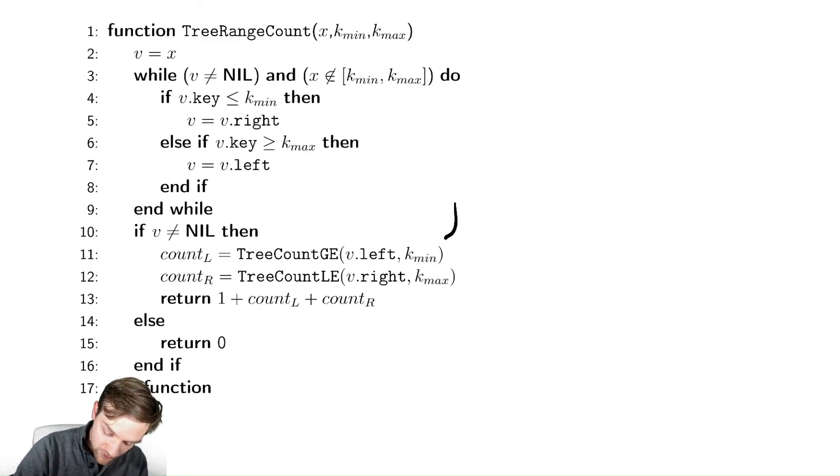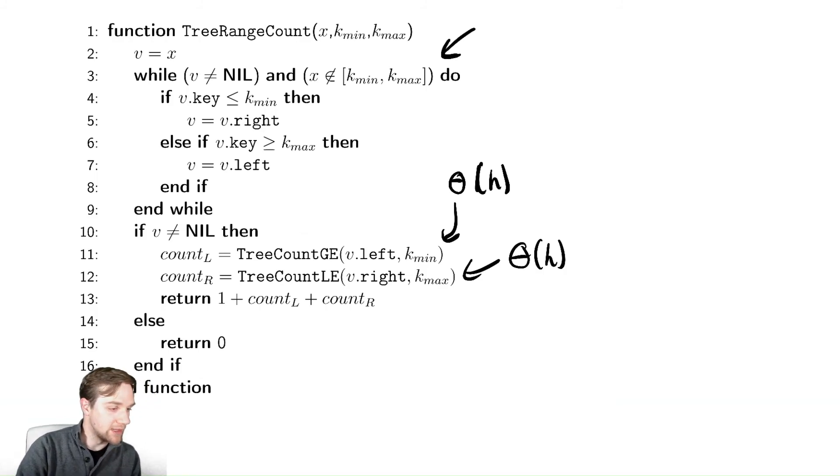And conveniently, the runtime of this code is theta of h, the runtime of that method is theta of h. This while loop is just ascending the tree either to the left or to the right only one at a time, so it's also in theta of h.